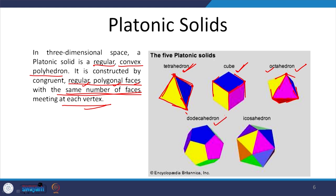We have another platonic solid called the dodecahedron — in it pentagons meet together, and at each vertex 3 pentagons come together. It is always a convex solid with the same number of faces meeting at each vertex. The last one is an icosahedron — for icosahedron, 5 equilateral triangular surfaces meet at each vertex and there are a total of 20 faces. Only 5 solids qualify as platonic solids.